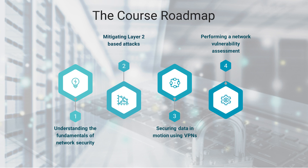This course is broken down into four sections. Section one will cover the understanding of fundamentals of network security. Section two, we'll take a look at implementing security controls to mitigate various layer two based attacks. Then in section three, you will learn about securing data in motion using VPN technologies. And finally, section four, we'll take a look at performing a network vulnerability assessment on a system and a network.